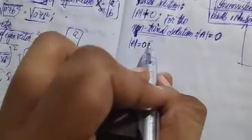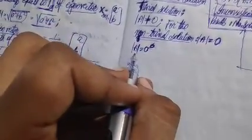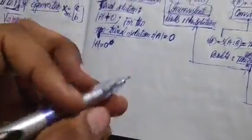We know the determinant equals 0 when certain rows and columns are dependent on one another. If certain rows and columns are dependent on each other, the determinant is going to be 0, and this corresponds to the non-trivial solution.